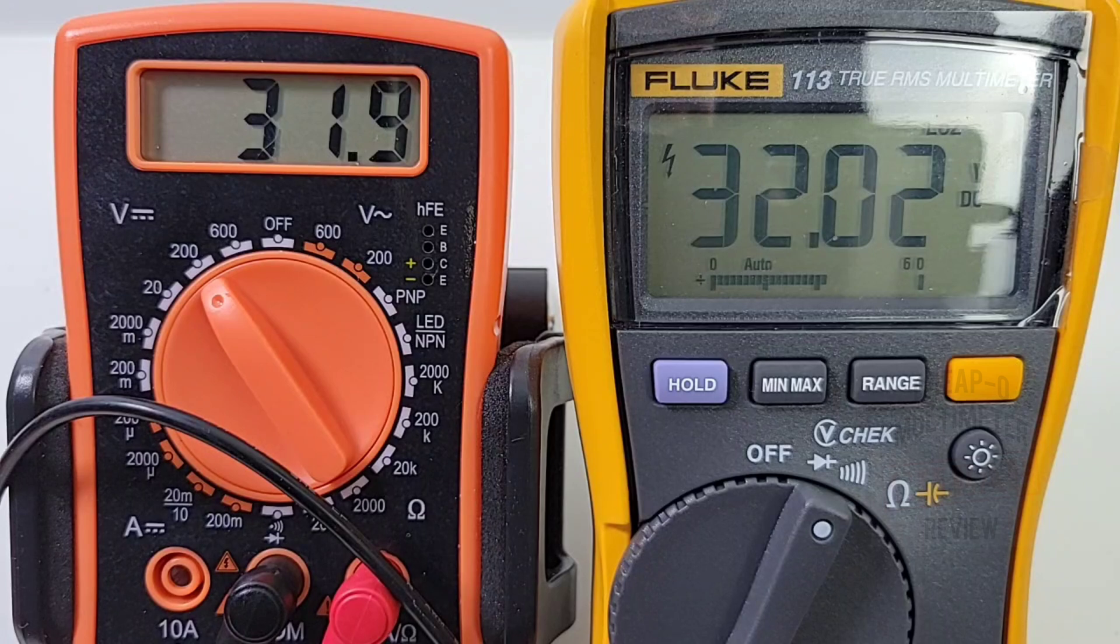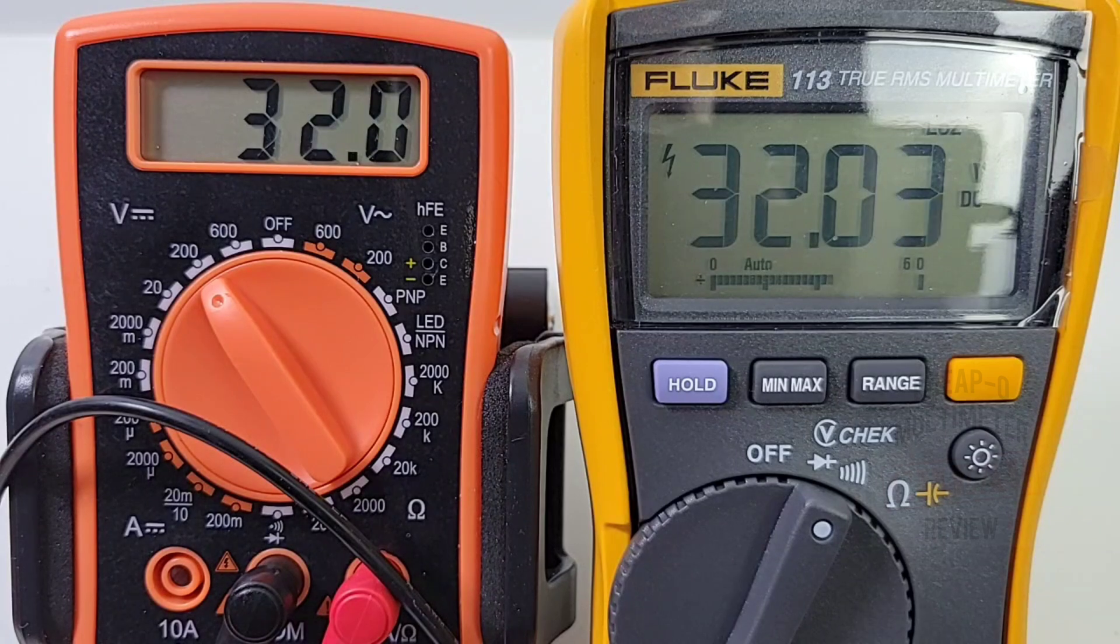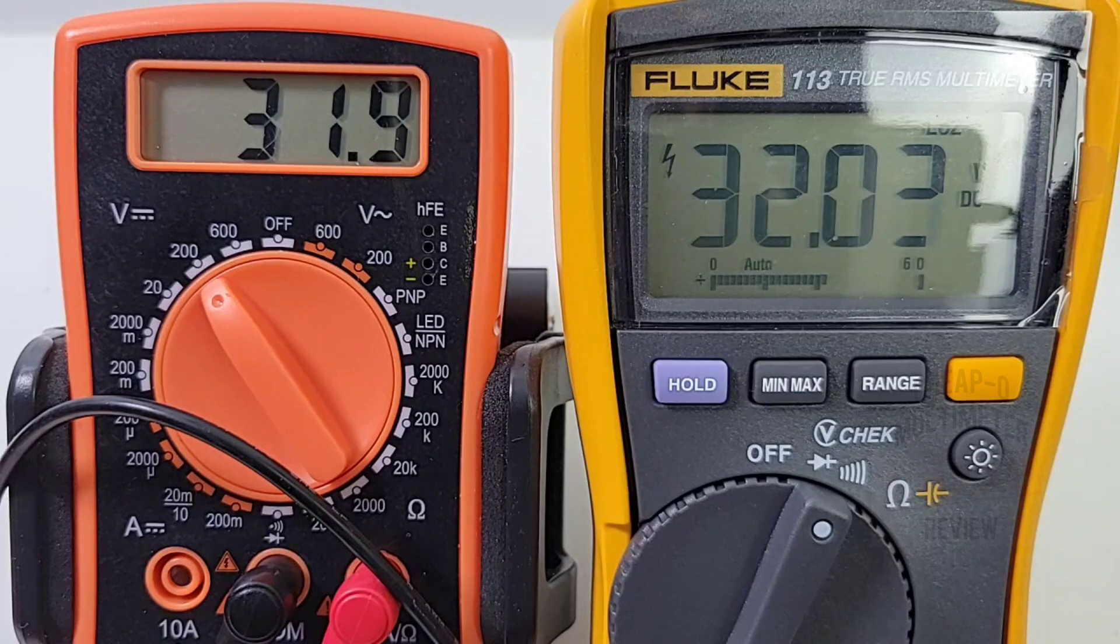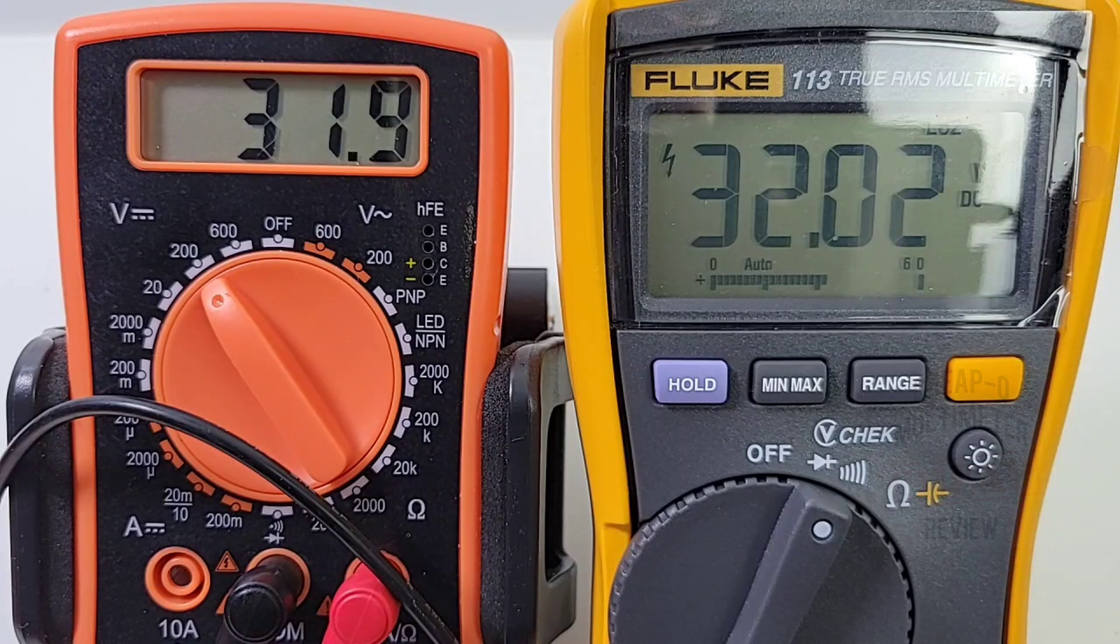Let's max it out now. 32 volts even steven. 32.0 for the Fluke, and oh come on Rushoi, finish off with a bang. I'm going to give it to you, 32 point even. That's so close, 31.9 to 32 for the Rushoi.